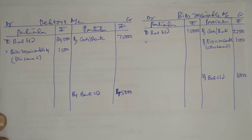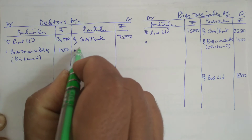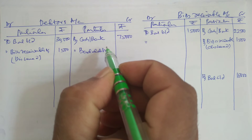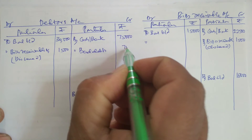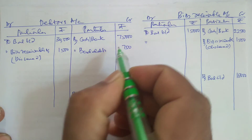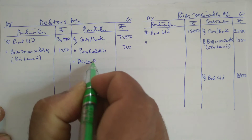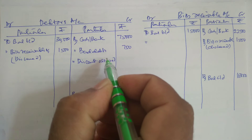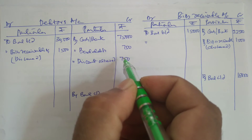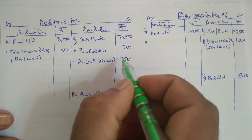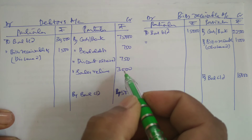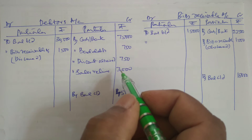And there is bad debts of Rs. 750. Bad debts is an amount which must be credited to the debtors account — bad debts Rs. 750. After that, there is discount allowed to debtors — this is also credited — discount allowed to debtors Rs. 750. It must be credited to the debtors account. After that, there is sales returns of Rs. 3,000 — sales returns Rs. 3,000. These are the various amounts given in this problem.